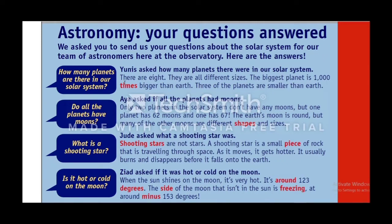Question two: do all the planets have moons? I asked if all the planets had moons. Only two planets in the solar system don't have any moons, but one planet has 62 moons and one has 67. The Earth's moon is round, but many of the other moons are different shapes and sizes.